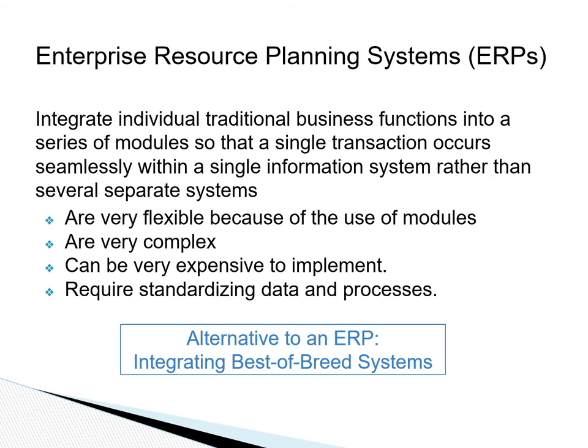Sometimes organizations decide to implement the best of breed instead of an ERP. In this approach, the organization may implement the best HR system and the best finance system, but then the organization has to make sure that these various applications communicate with one another so they can prevent multiple and duplicate data entries.